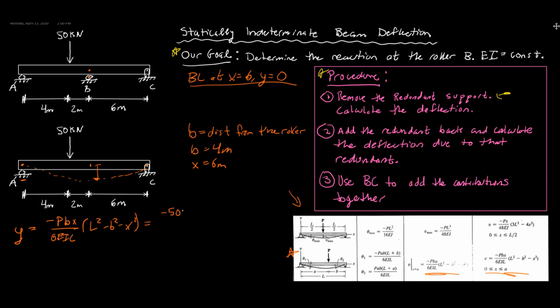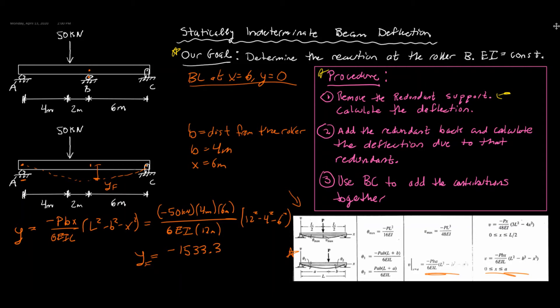Plugging everything in: that's negative 50 kilonewtons, B is four meters, X is six meters, over 6EI, L is the whole beam length of 12 meters, multiplied by 12 squared minus 4 squared minus 6 squared. We get Y due to the force equal to negative 1533.3 kilonewton·meters³ over EI. We leave this in terms of EI. The negative sign means deflection is going downward.